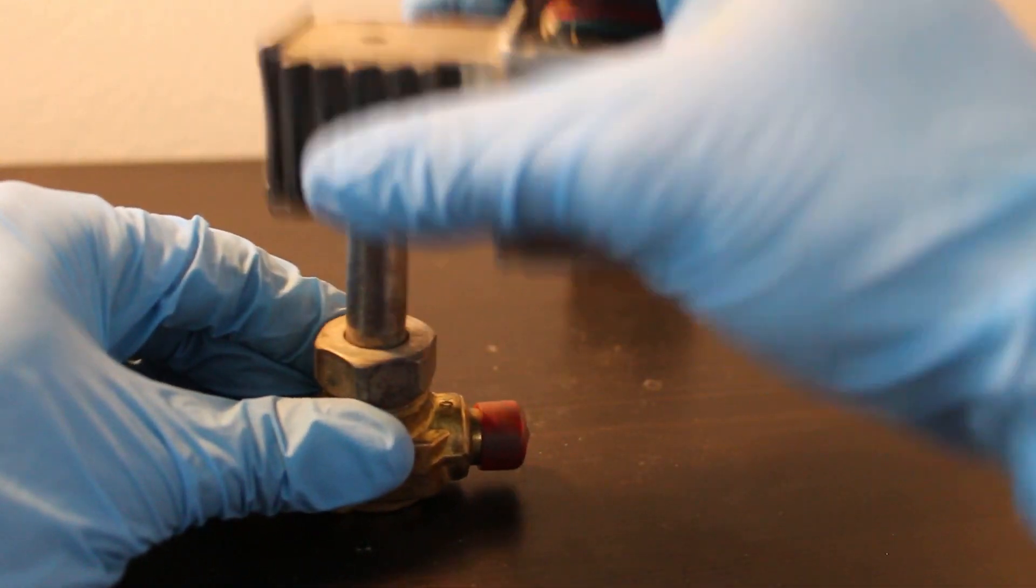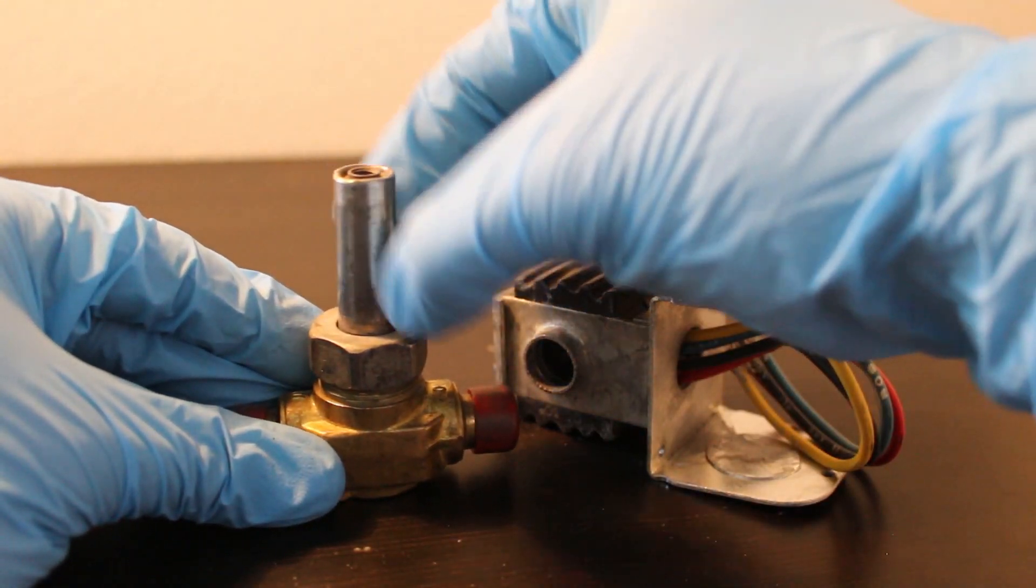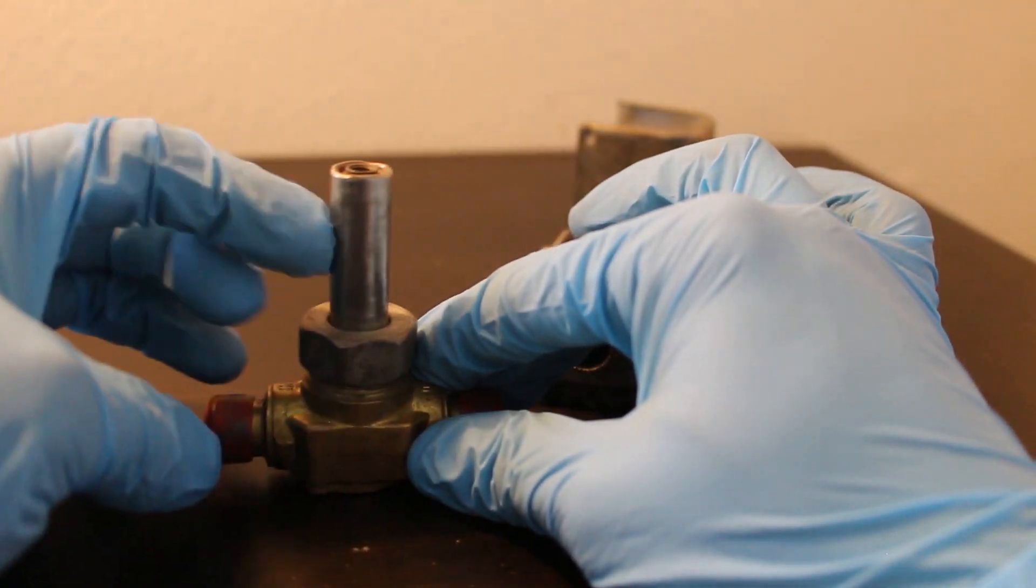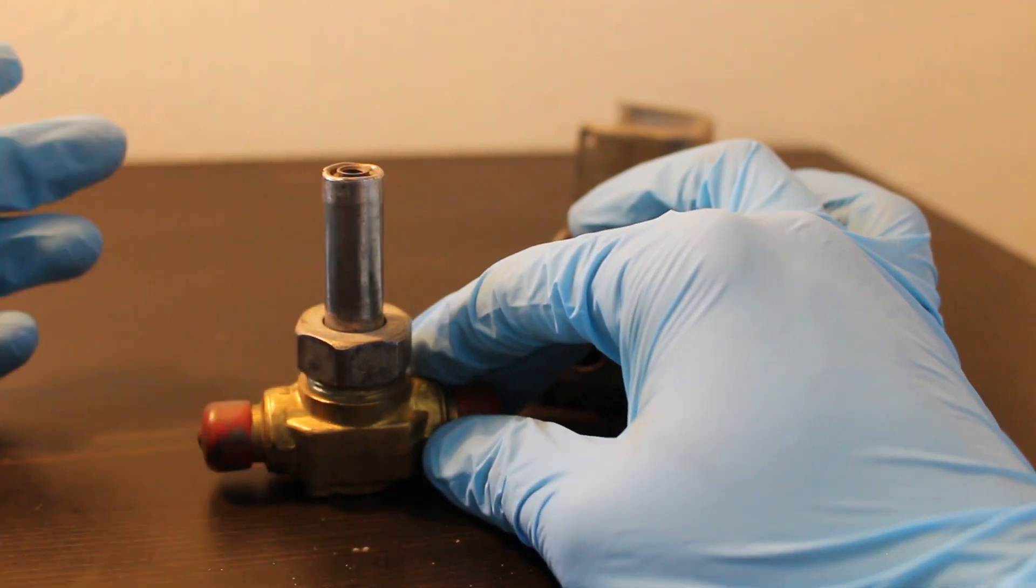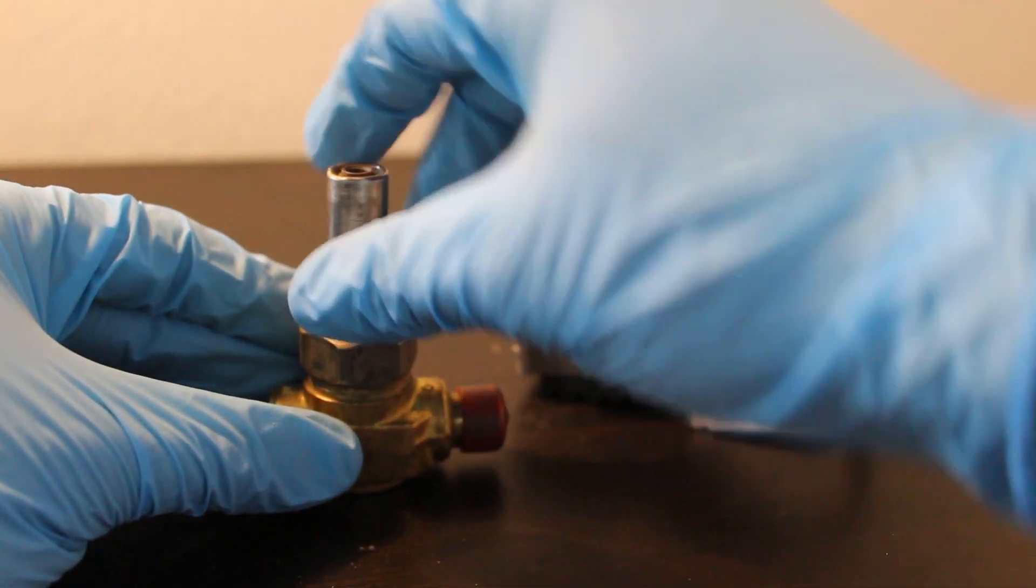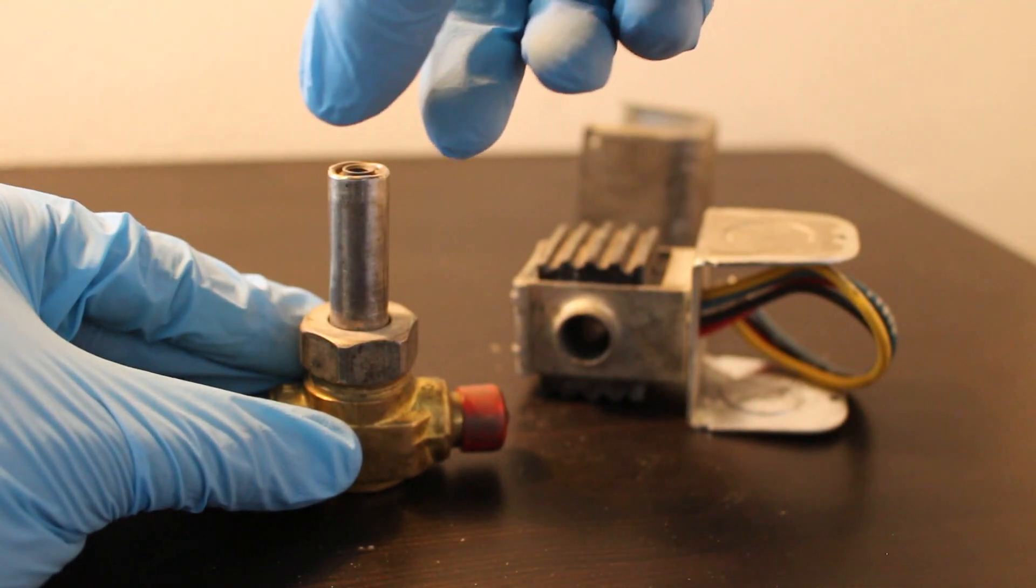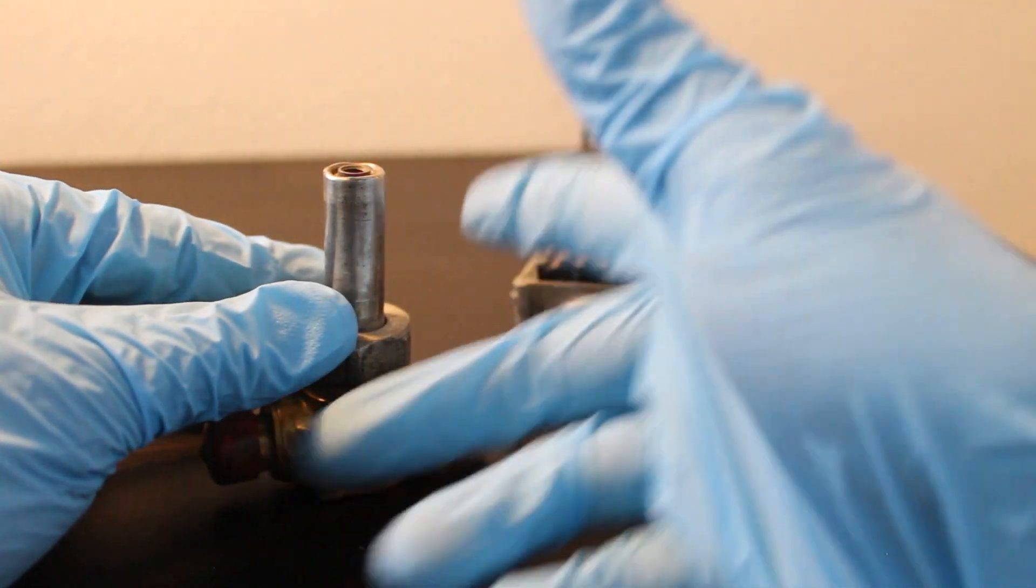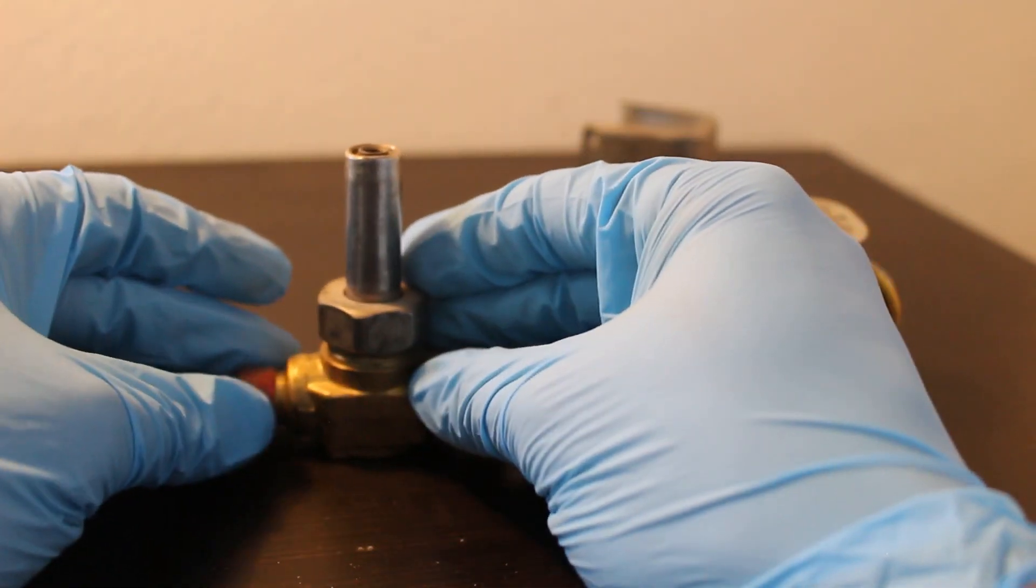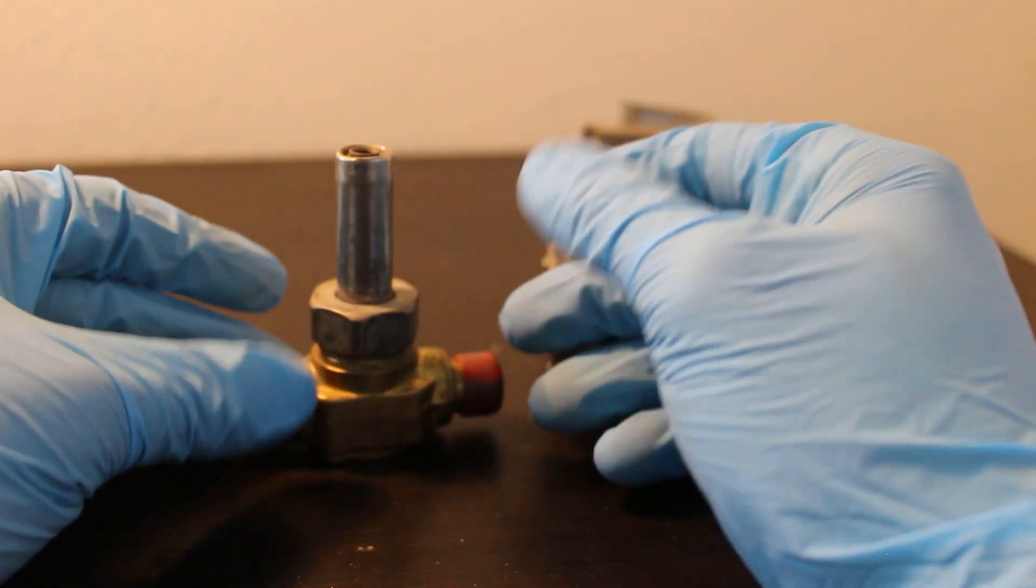So once we're energized, we create a magnetic field, and now this area is magnetically energized. And what's inside here is a plunger, which is held down by a spring, as I explained. And once it's energized, it pulls up and allows liquid or gas or whatever it is you're trying to flow through this solenoid valve to freely flow through.